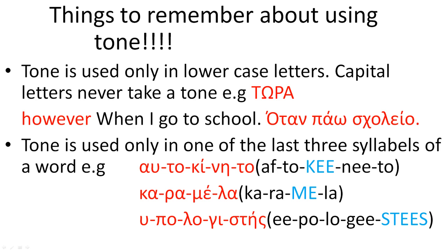Tone is used only in one of the last three syllables of a word. Let's see some examples of words with more than three syllables: aftokinito, which means car; karamella, which means bonbon; and hipolegistis, which means computer. Although these words have more than three syllables, none of them has a tone on the fourth or the fifth syllable.